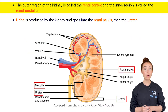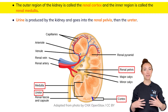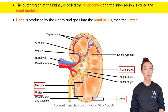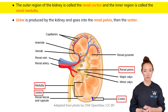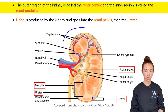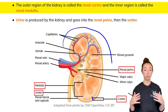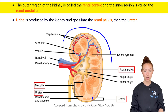The outer region of the kidney is called the renal cortex — we can see the cortex right here. This whole structure is our kidney and it has two main layers that we're going to reference a lot. It has a cortex, which is the outer part — the cortex is always the outer part.